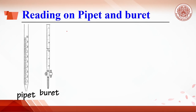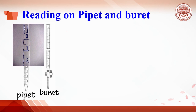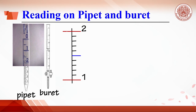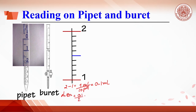Looking at the pipette and burette, they show a similar scale where 1 ml is divided into 10 parts. The smallest scale is 1 ml divided by 10, equal to 0.1 ml. The absolute error is 0.1 divided by 2, equal to 0.05 ml. This means the reading from these devices contains 2 decimal places, so the burette and pipette are more accurate than the cylinder.